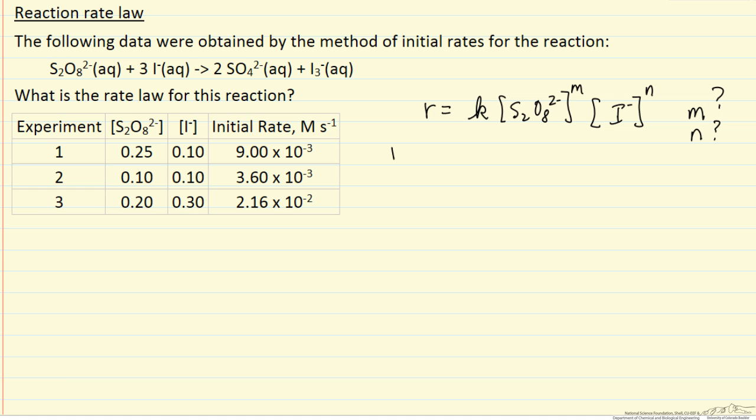So if I write this that the rate 1 over rate 2, well this is the rate constant, the concentration of S2O8 which is 0.25, this is moles per liter, and then raised to the power m, and the concentration of iodine raised to power n. And now rate 2 is the same rate constant, this concentration is different, this concentration is the same, so of course these terms cancel, these terms cancel.